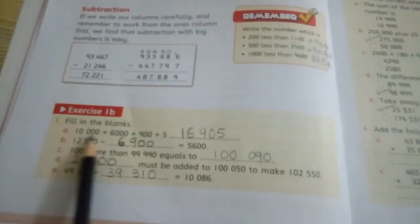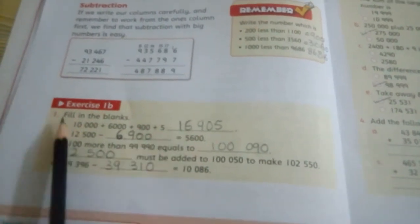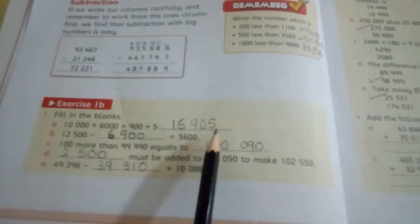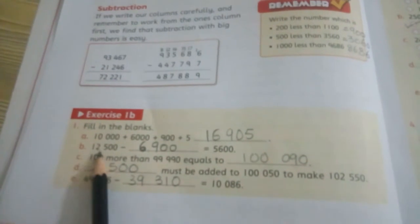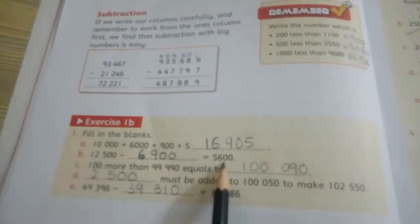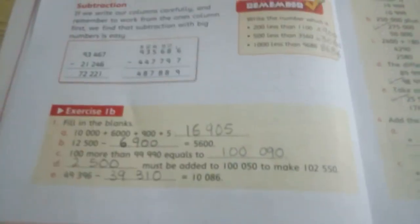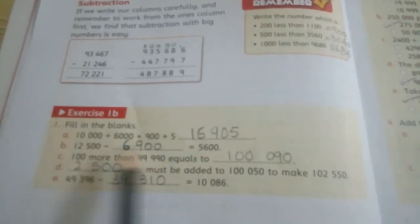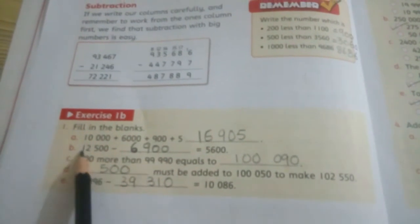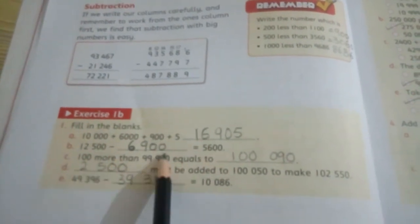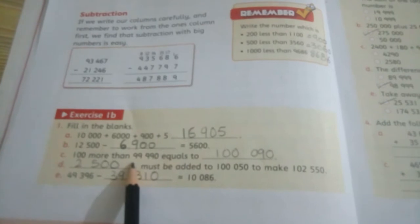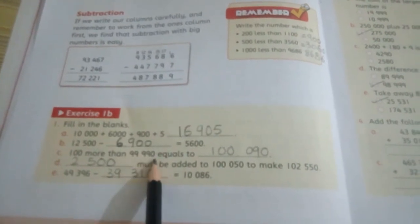Now let's do Exercise 1B, question number one: fill in the blanks. Part A: Ten thousand plus six hundred plus nine hundred plus five. You will first add these numbers on the rough page and then write the answer. Part B: What number will you subtract from this number to get this answer? You will subtract the answer from this number.